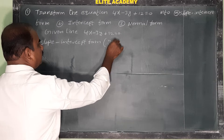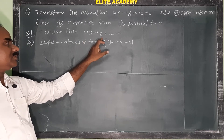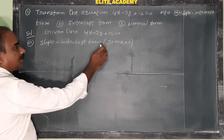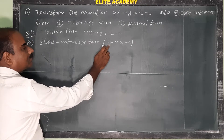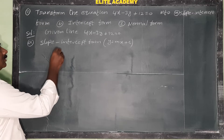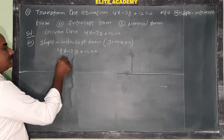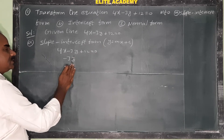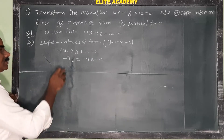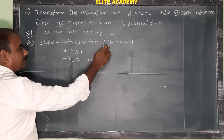First form: slope-intercept form. The general form of a straight line is ax plus by plus c is equal to 0. To convert, we bring the y-term to the left side with coefficient 1. So from 4x minus 3y plus 12 equals 0, move the x-term and constant to the right: minus 3y equals negative 4x minus 12. Now divide the entire equation by minus 3.